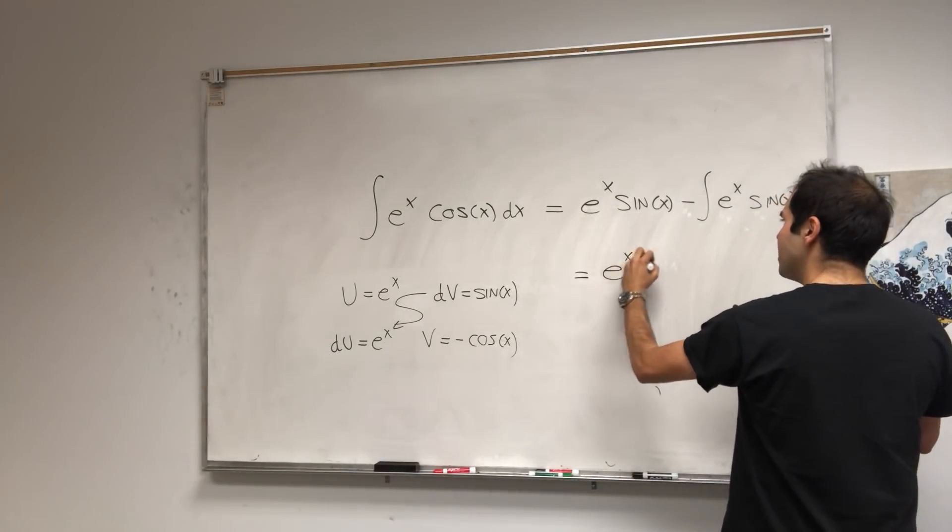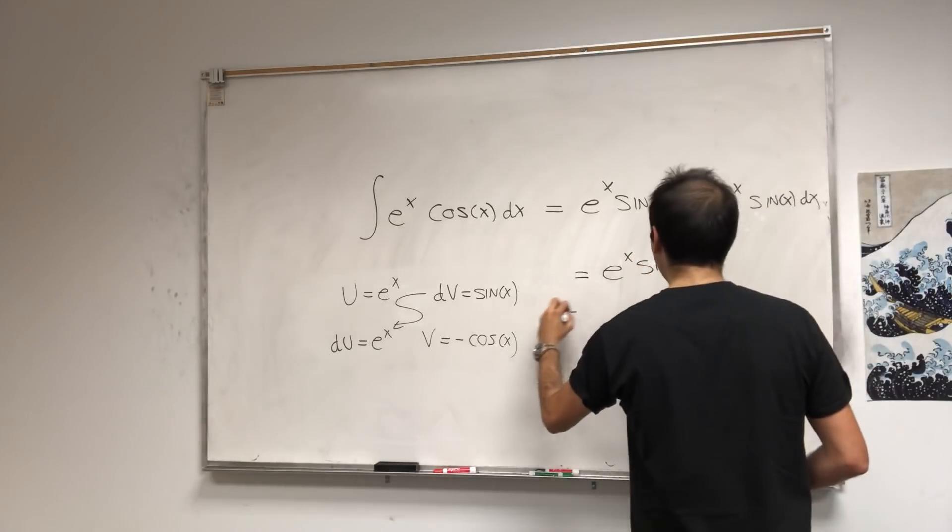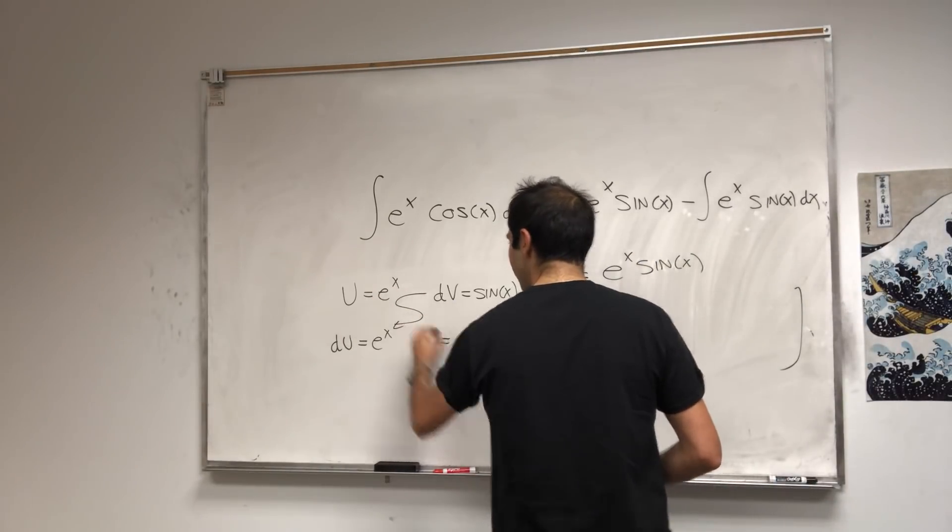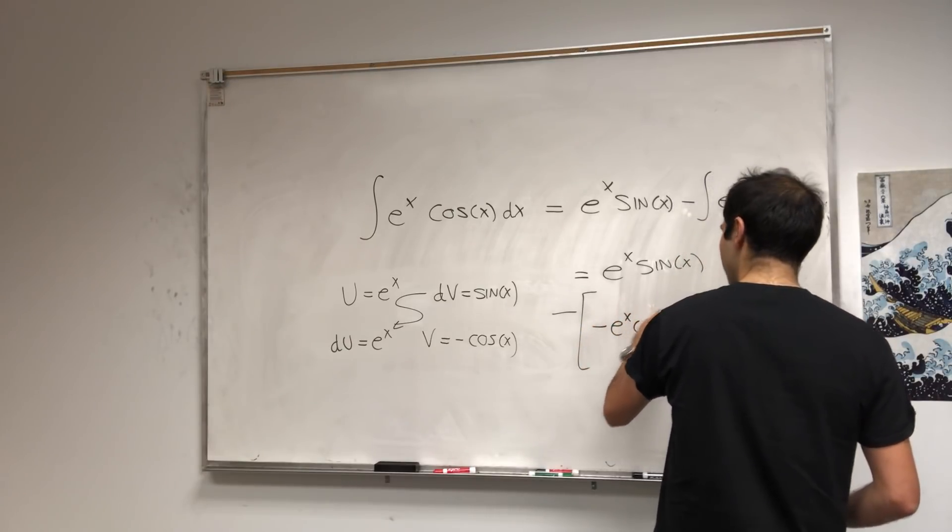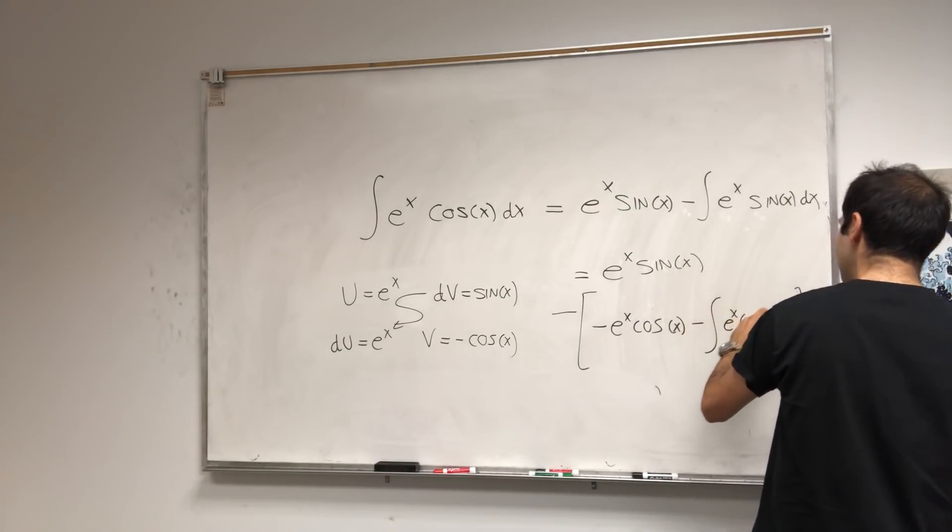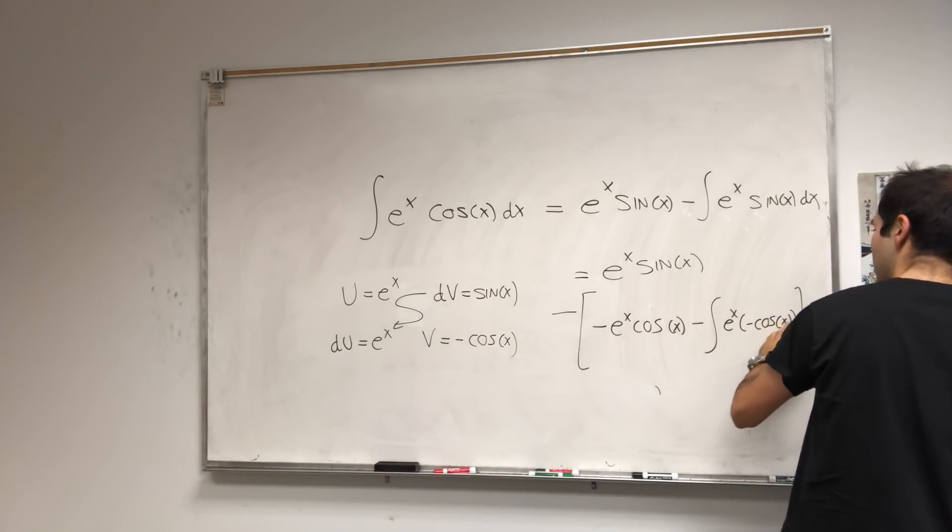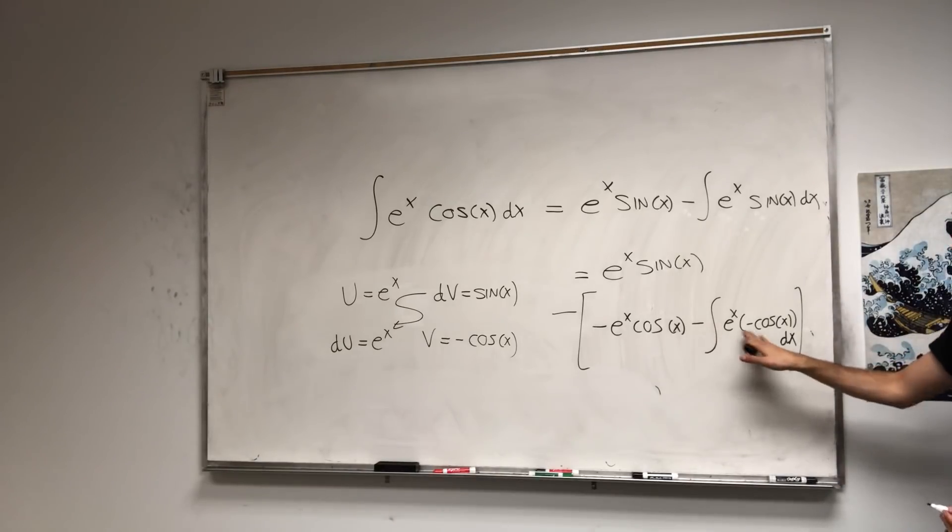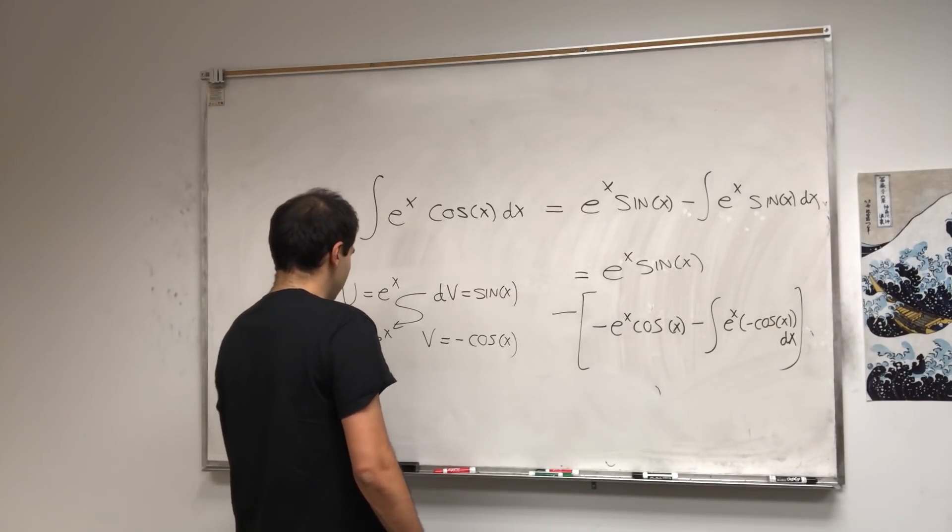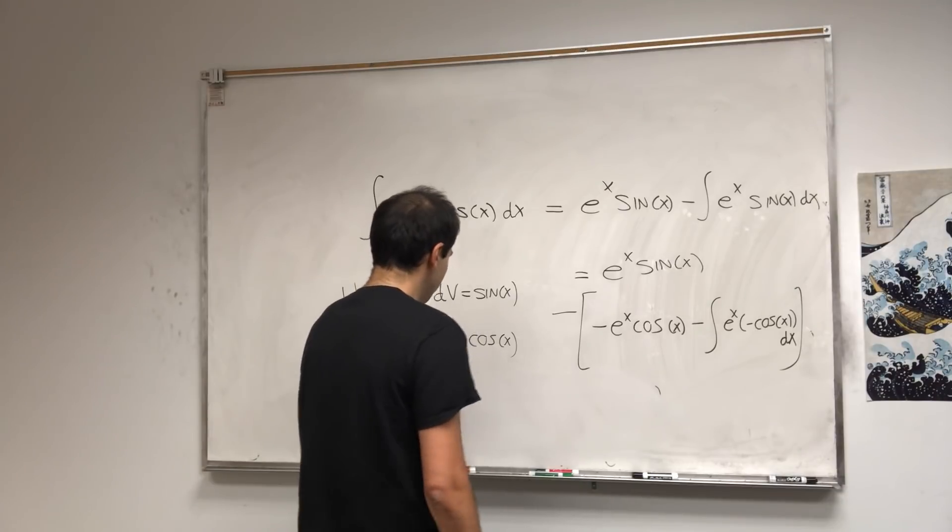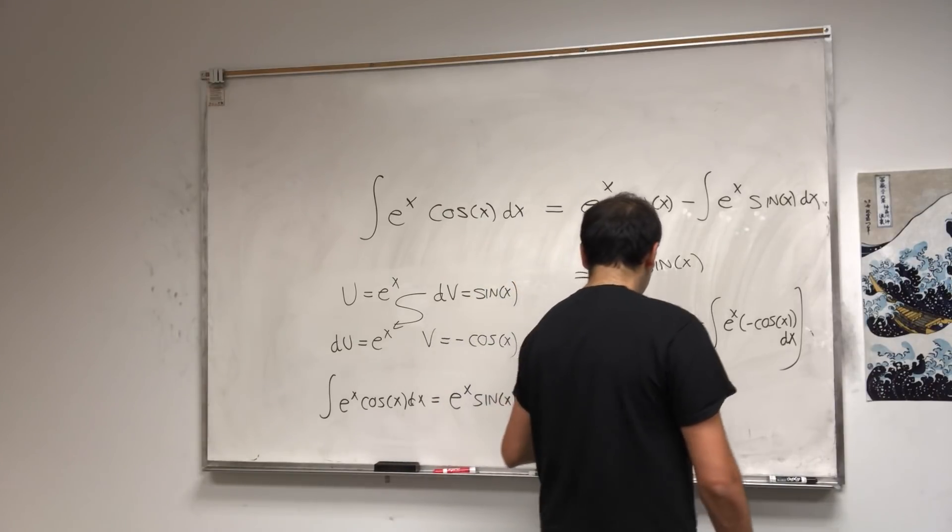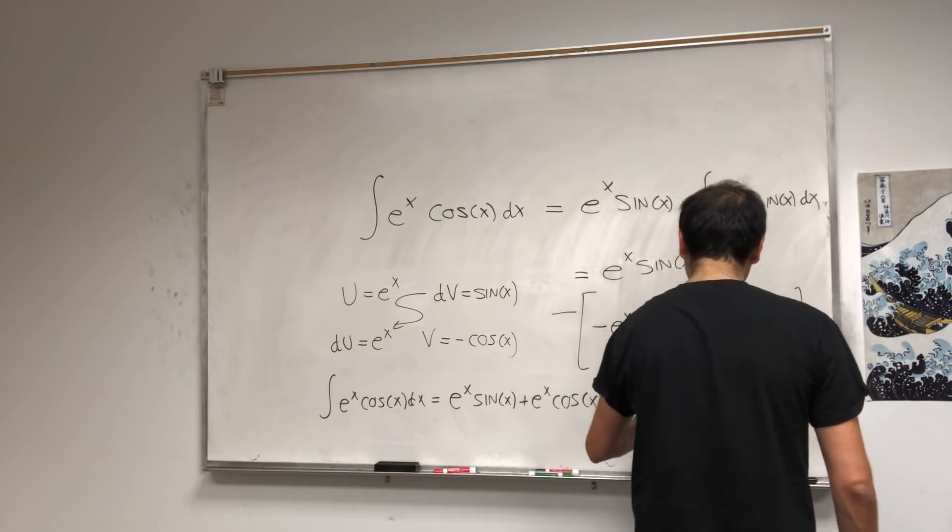Then what you get, you solve: e^x sin(x) minus, and write it this way, it's very important. We have minus e^x cos(x) minus integral of e^x minus cos(x) dx. So be really careful, there are here three minuses at play, but then what you get is integral e^x cos(x) dx becomes e^x sin(x) plus e^x cos(x) minus integral of e^x cos(x) dx.